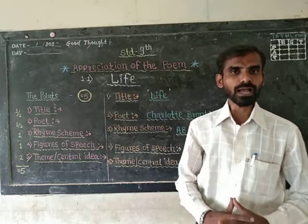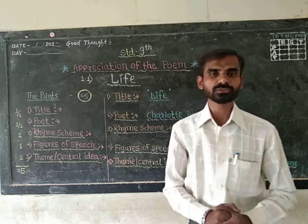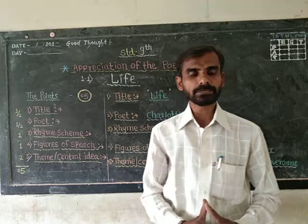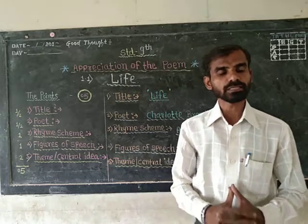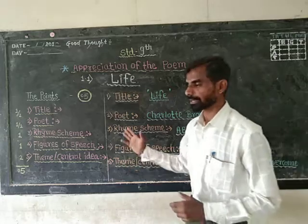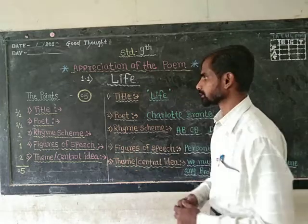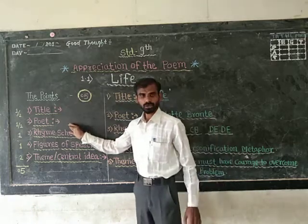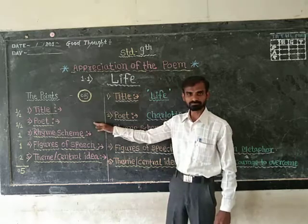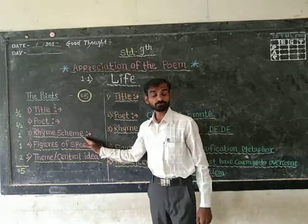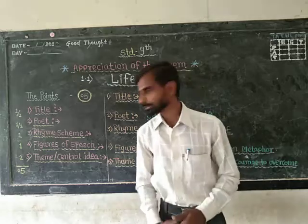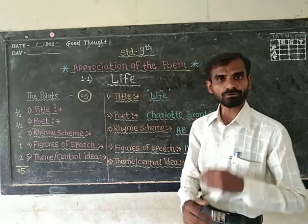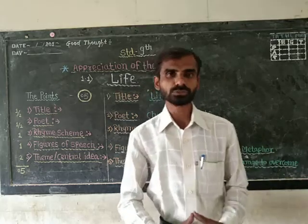On what basis do we have to write an appreciation? First, we are going to understand the points. Let us start the appreciation of an English poem using 5 different points. The points are: Title of a poem, which carries half a mark; Poet of a poem, once again half a mark; Rhyme scheme of a poem, for 1 mark; Figures of speech, for 1 mark; and Theme or central idea of a poem, which carries 2 marks.